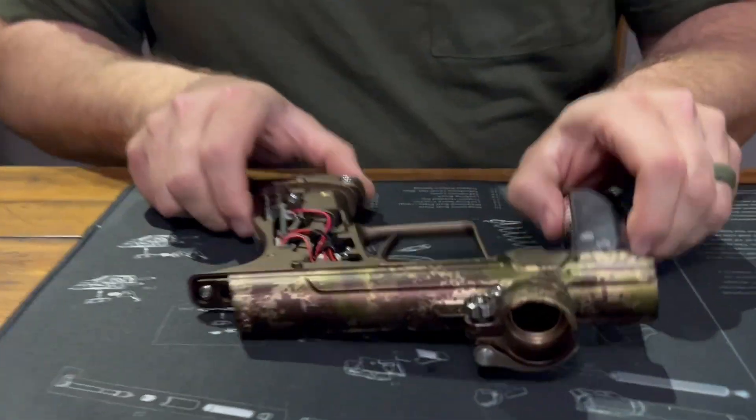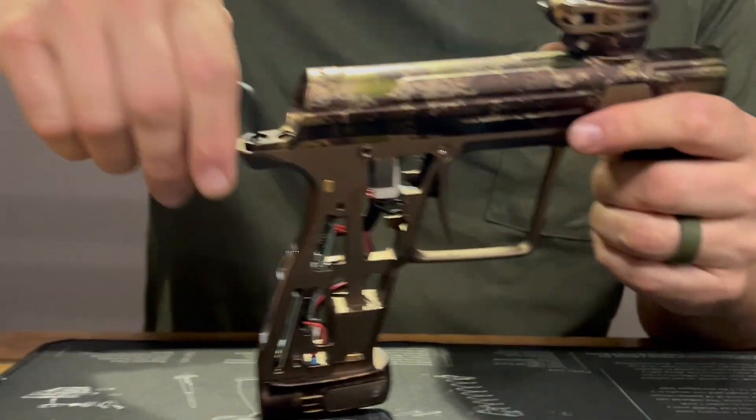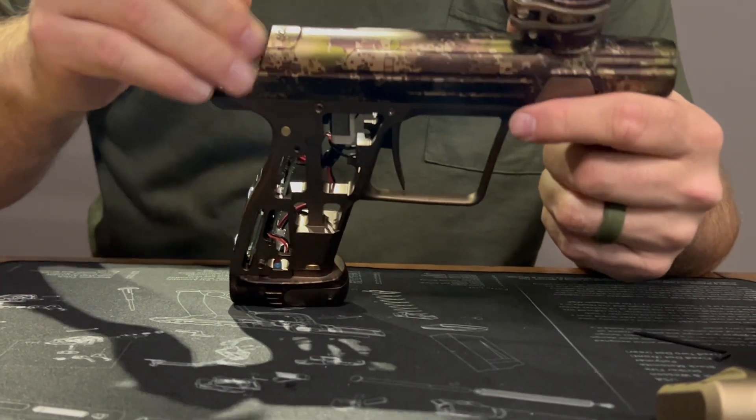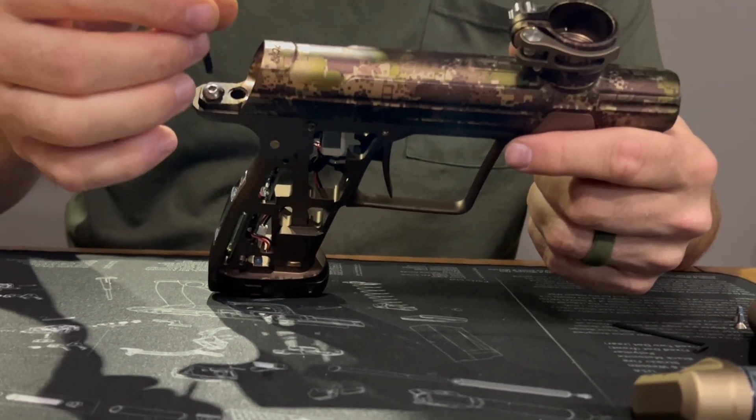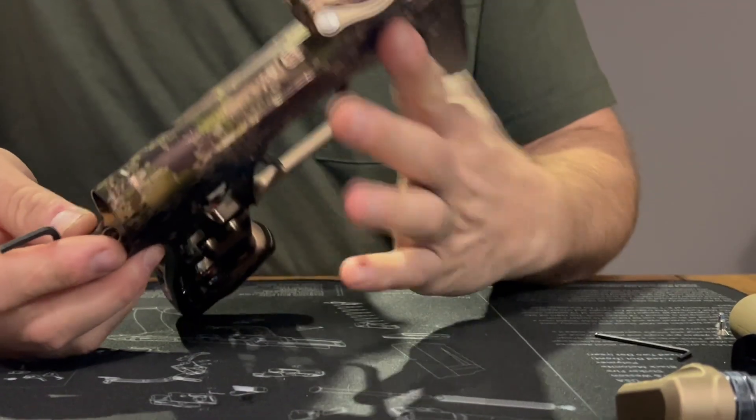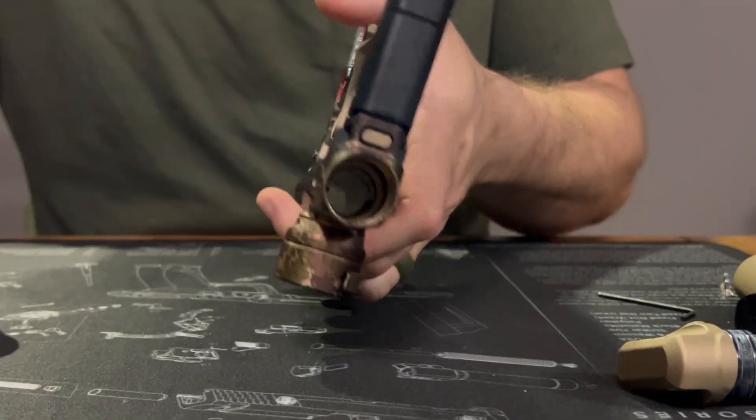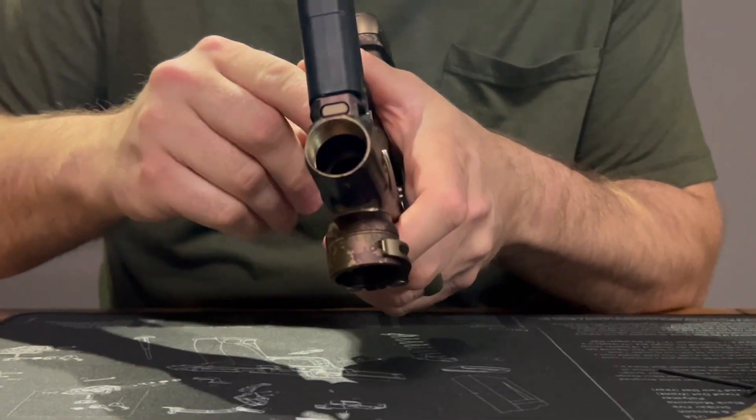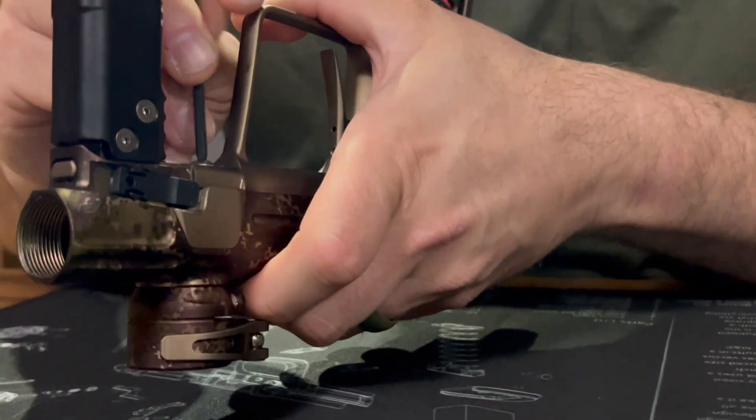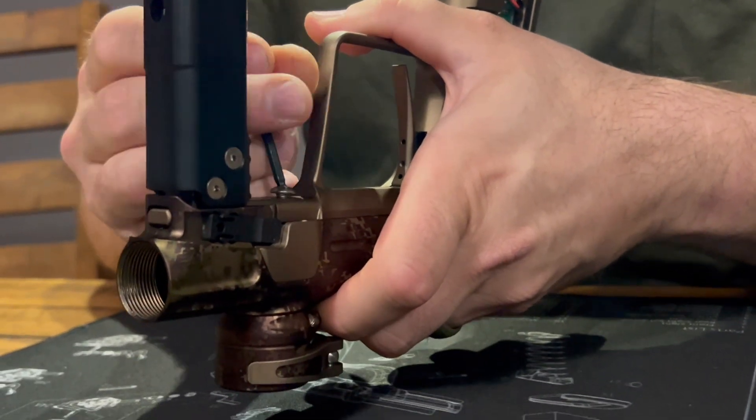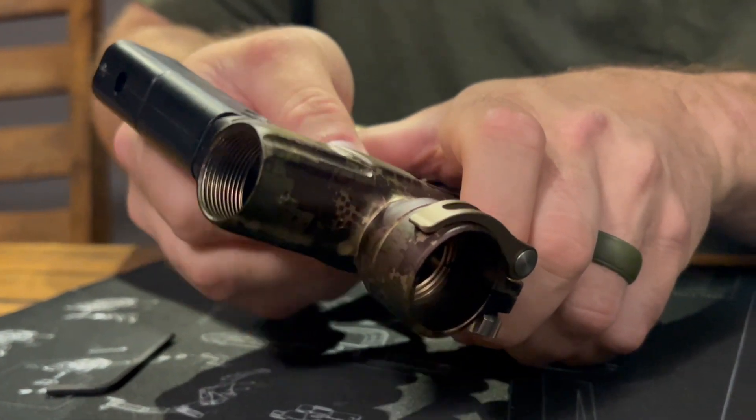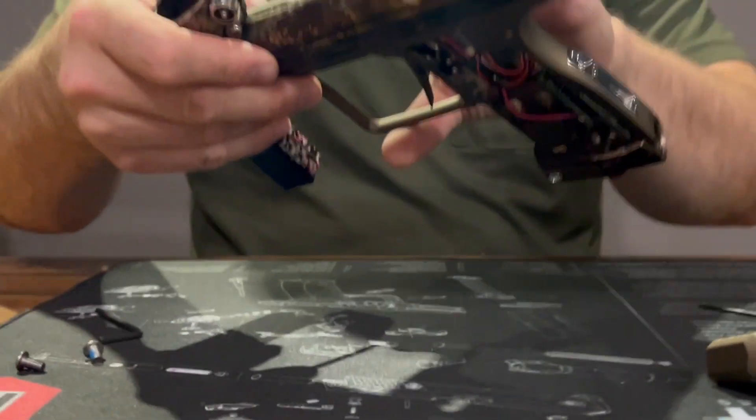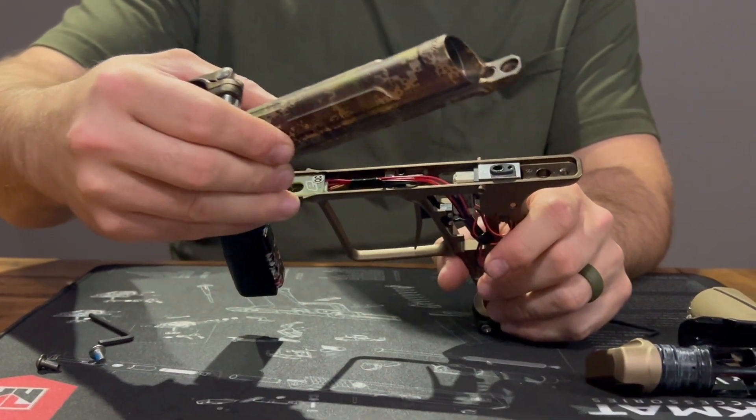Next thing you want to do is take this screw out here, and there's one on top that you want to take out. Again, you want to use that smaller end just to break them loose, and you can use your ball end. Take them out and set them off to the side. Then you're going to just roll this forward and pull the body off.